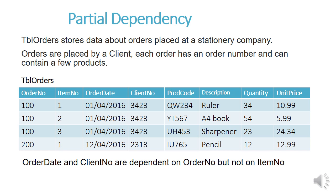Each order will be placed on a certain date. You can see that the order date is only dependent on the order number, which is a partial dependency because it's not dependent on the item number at all. The client number is also only dependent on the order number and not on the item number. Order number 100, for example, has three items: a ruler, an A4 book, and a sharpener, with the quantities and unit price of each shown.